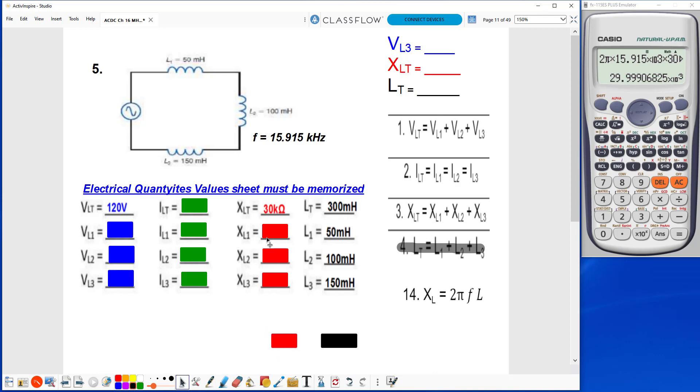For XL1, I'm going to use the L1 value, so up here it's 2π, it's going to stay the same, times the frequency is going to stay the same, 15.915 times 10 to the third kilohertz. So I'm just going to change my millihenries to 50 millihenries, and that is going to round up to 5k ohms.